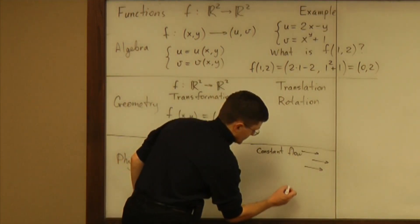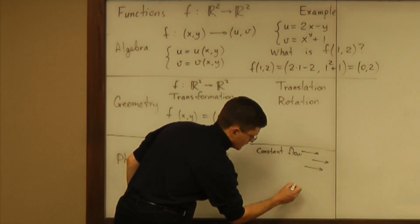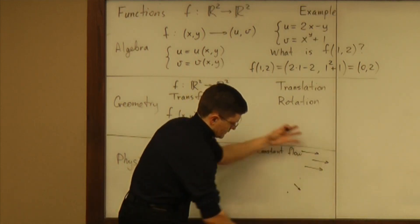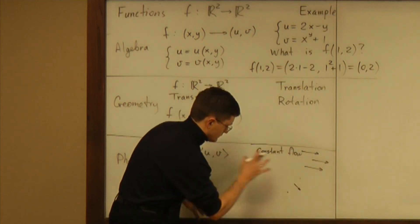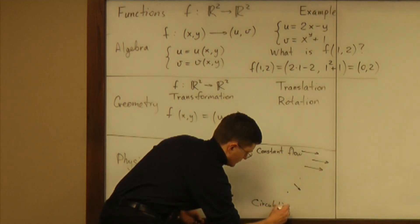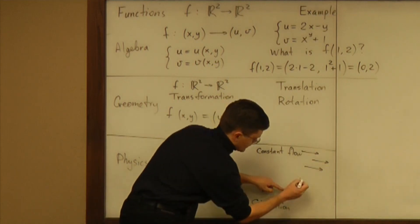Another example would be when you have circulation around some center. Let's just call it circulation - this motion around the center.